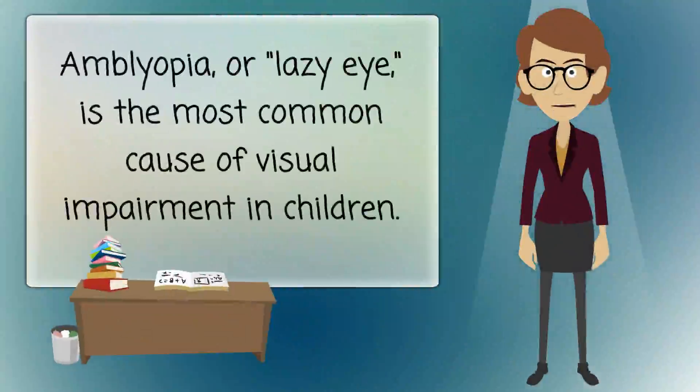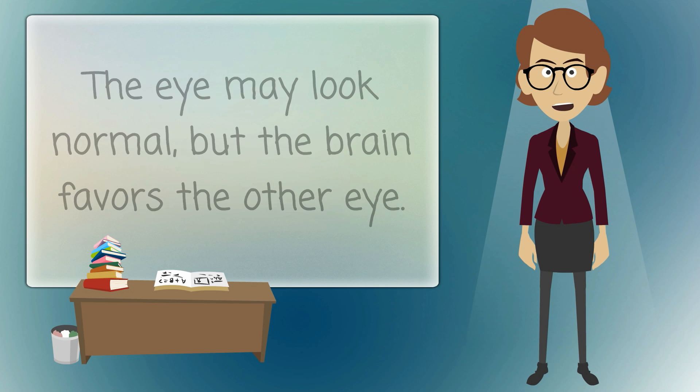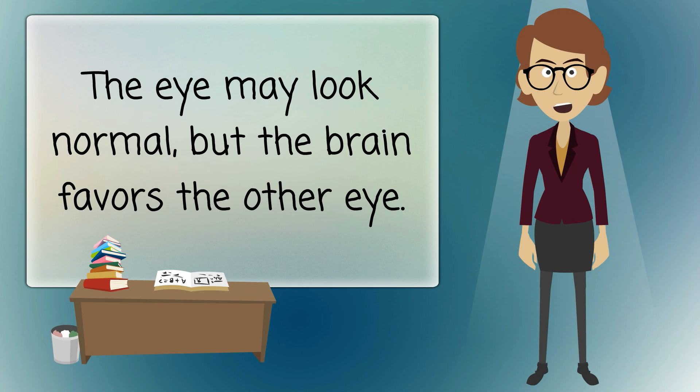Amblyopia, or lazy eye, is the most common cause of visual impairment in children. It happens when an eye fails to work properly with the brain. The eye may look normal, but the brain favors the other eye.